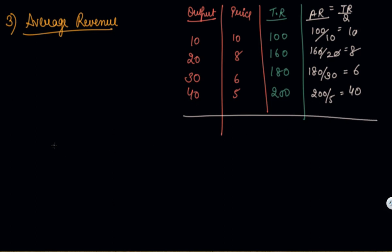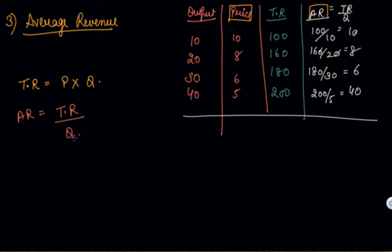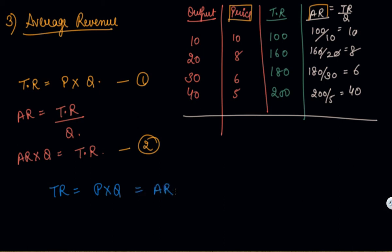From this, we can analyze that AR is equal to the price. TR is equal to price into output, and AR is equal to TR divided by Q. So AR into Q equals total revenue. By substituting the first equation into the second, TR equals price into quantity equals AR into quantity. Cancelling quantity, you get average revenue equals price.